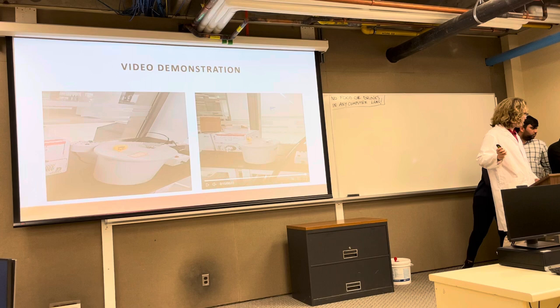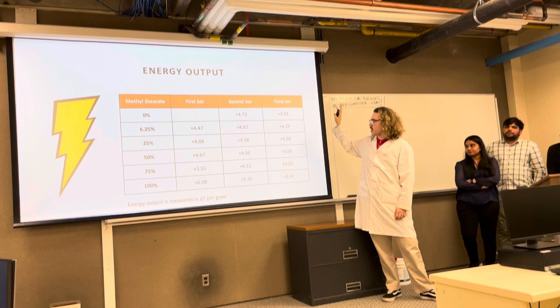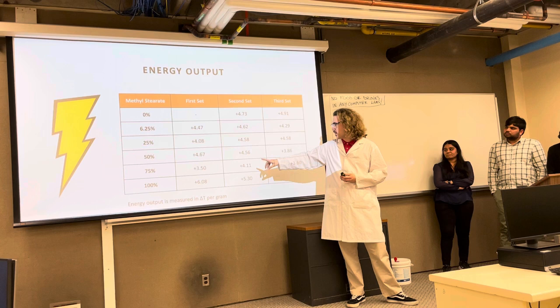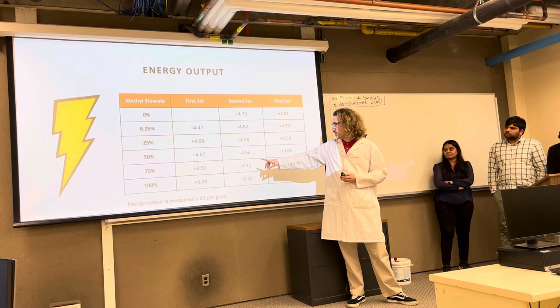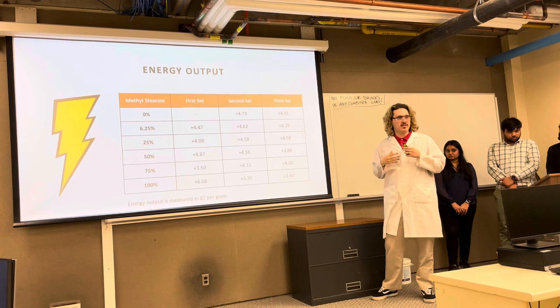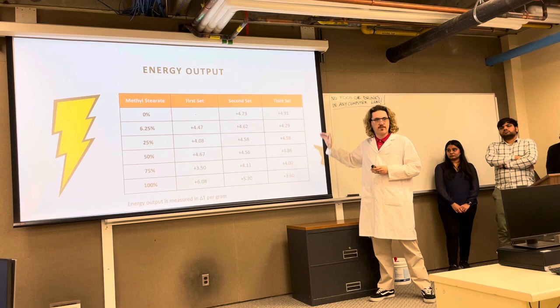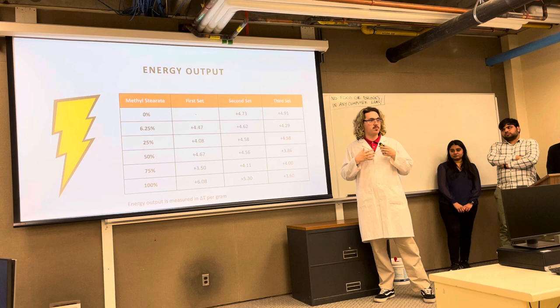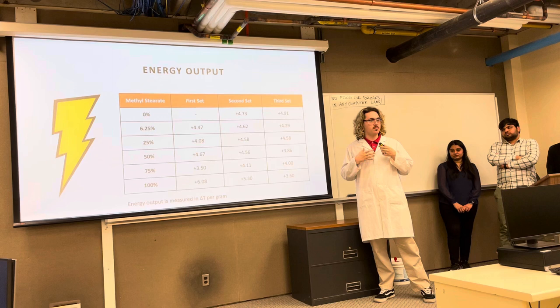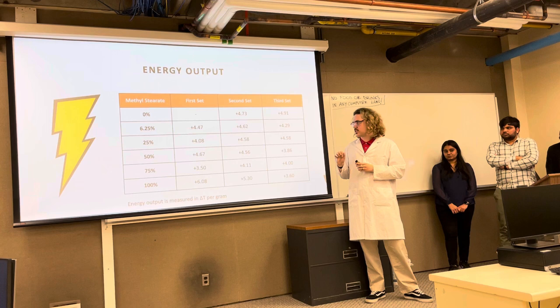Here is the graph of the energy outputs we found from bomb calorimetry. All values are measured in change in temperature in degrees Celsius per gram. The general trend is that the more methyl stearate is added to the blend, the less energy we get from it. We speculate this is because too much methyl stearate makes the reaction less efficient. Also, the 50% and 75% samples had a tendency to re-solidify, which likely interrupted the combustion process.